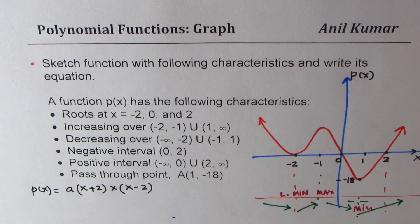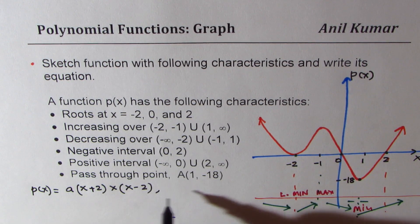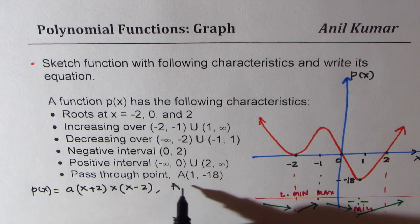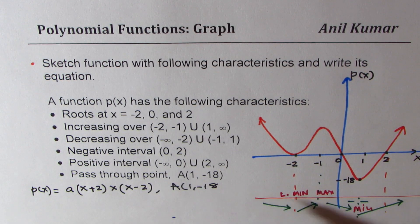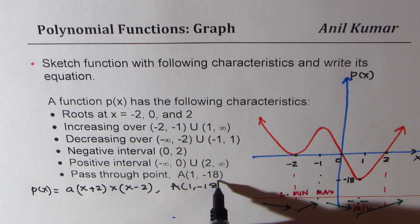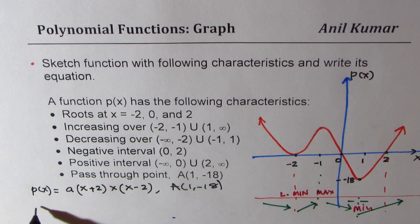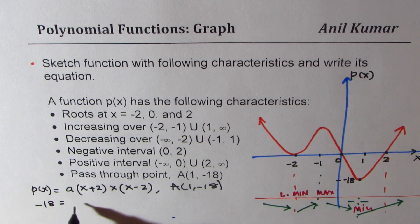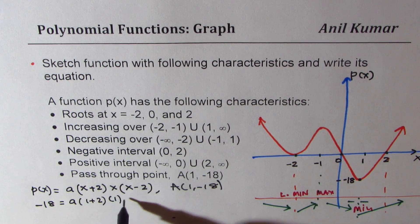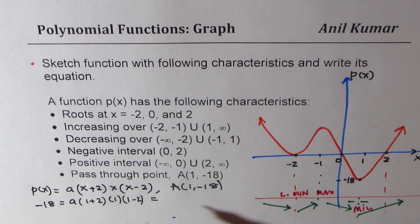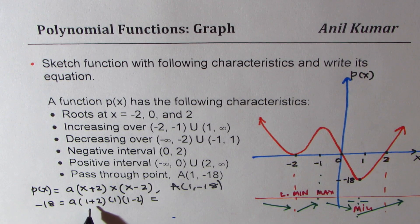So that becomes the equation. And we know that it goes through the point A, which is (1, -18). So substitute minus 18 and 1, and find the value of a. So we get (1 + 2) times 1 times (1 - 2). So that gives us 3.